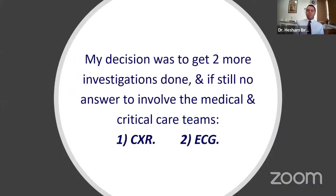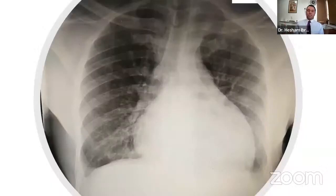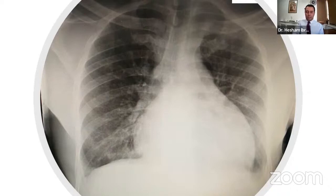I decided to get two remaining pending tests — chest X-ray and ECG — and then involve every senior in medicine and critical care, because I was losing this patient. The chest X-ray gave me the first clue: it was an AP film, so some cardiomegaly was expected, but the cardiothoracic ratio was far too large to ignore. That was the first clue.